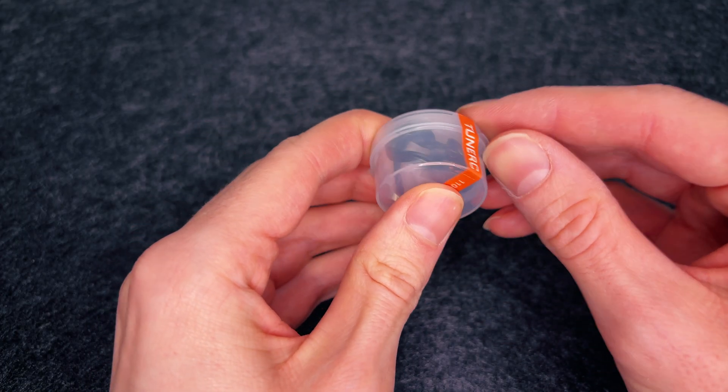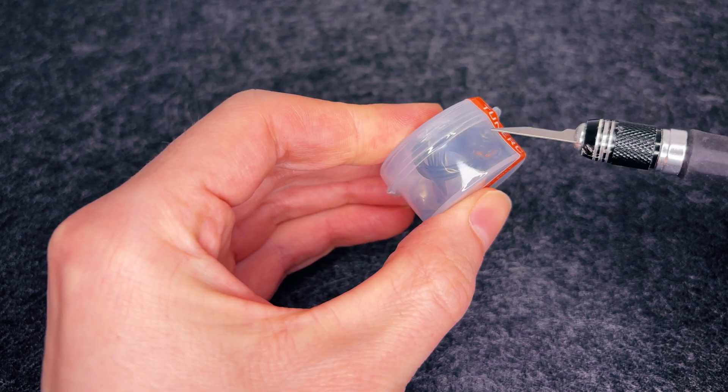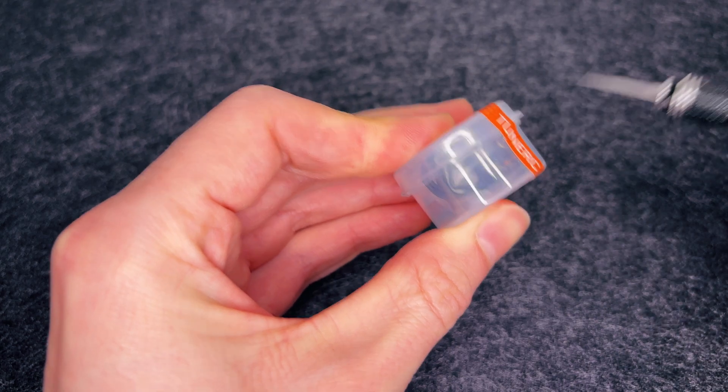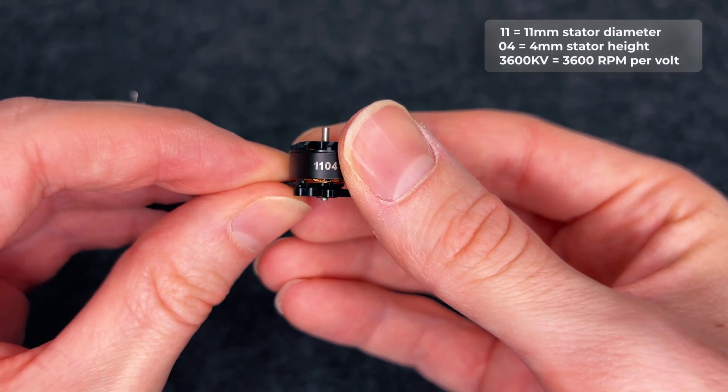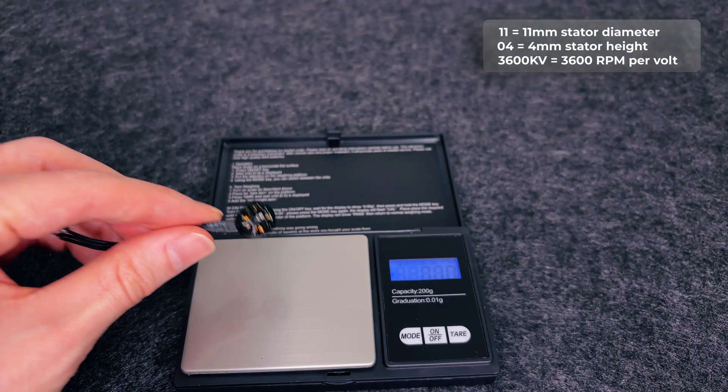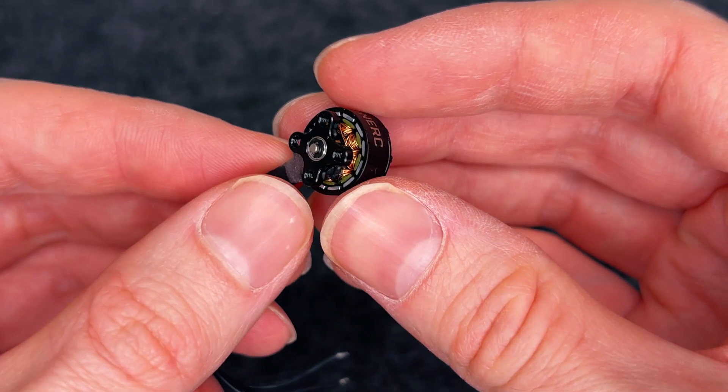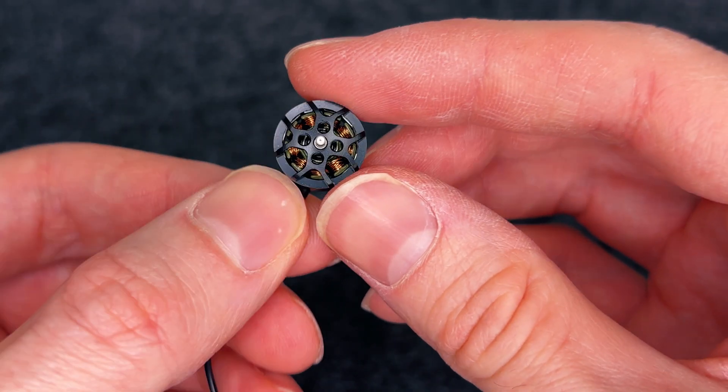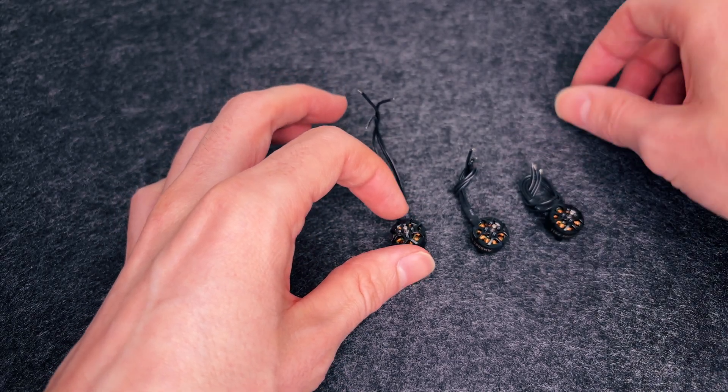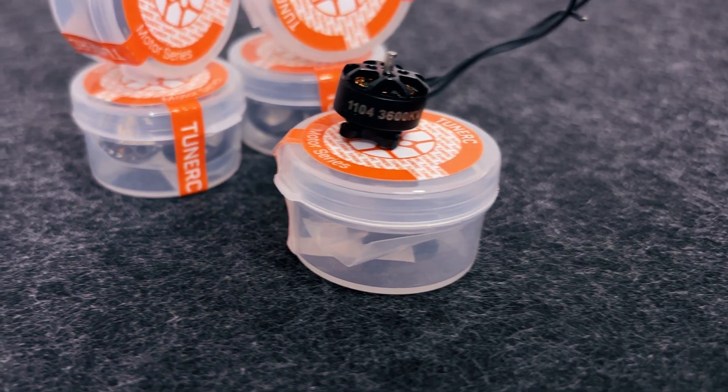Next, the motors. Before mounting them, let's take a moment to appreciate just how tiny these things are. 1104, 3600 KV, and only 5.2 grams each. That's lighter than a single AA battery. Gotta be honest, I was a little skeptical. Tiny motors like these, can they really deliver? We'll find out.